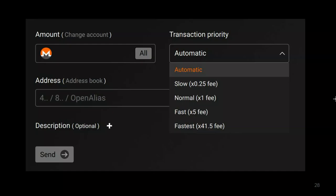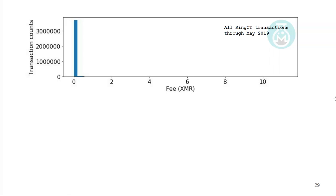There are some unusual fees that show up. The x-axis shows the fee attached to a particular transaction; the y-axis shows how many transactions used that fee. This covers all RingCT transactions since introduction through May 2019. The vast majority of users pay almost zero or a very small fee. Fun fact: there are actually two RingCT transactions that paid zero fee. If we look at the same plot on a log y-axis, we start to emphasize the odd things in the long tail. There's someone who paid 7, 10, and 12 Monero in fees — not sure if that was an accident or they were in a big rush.